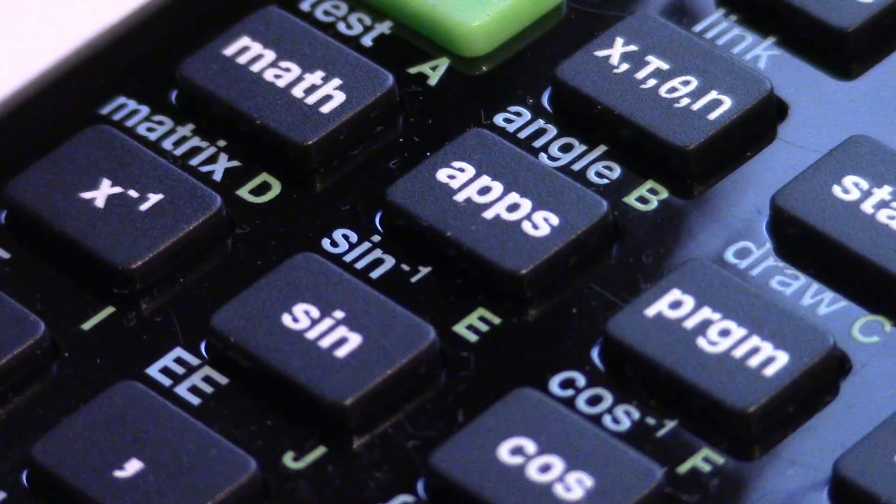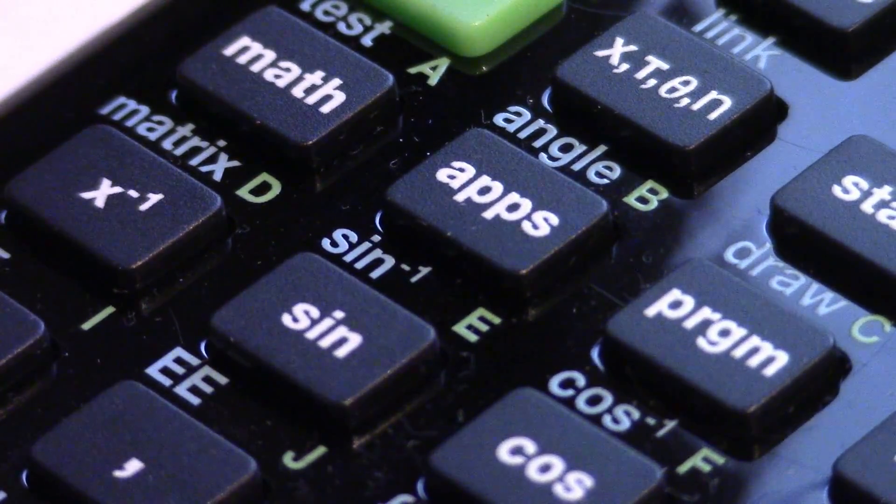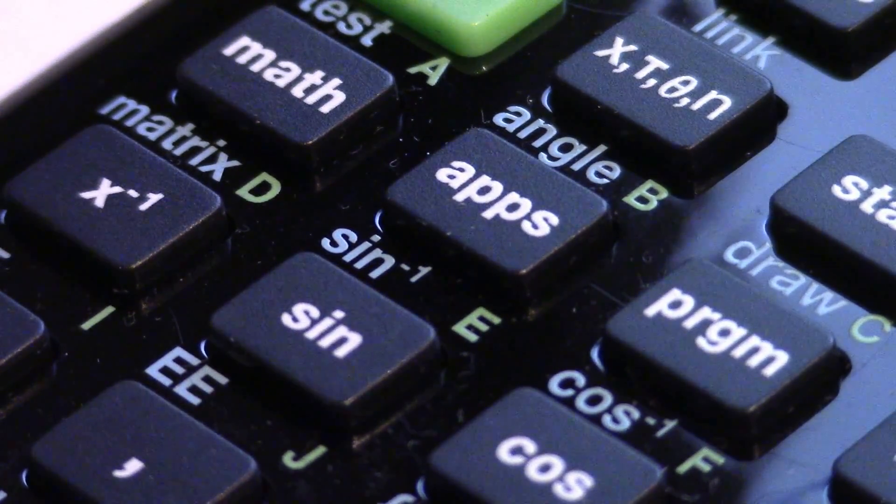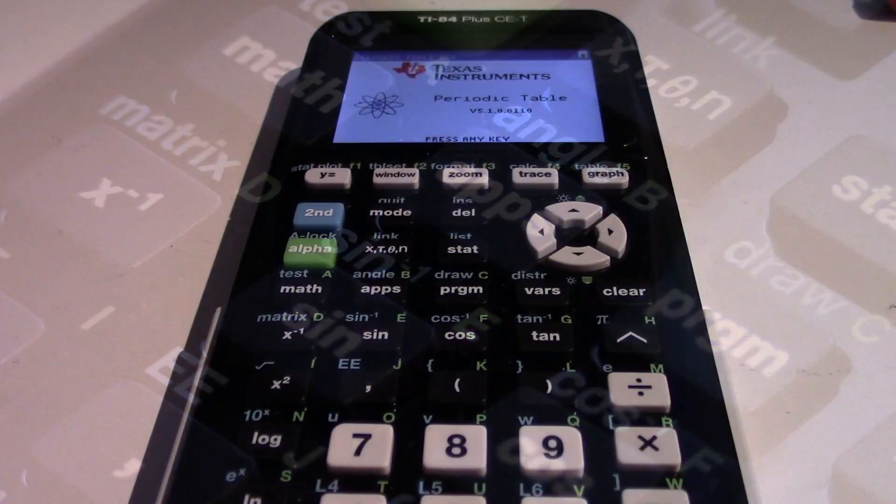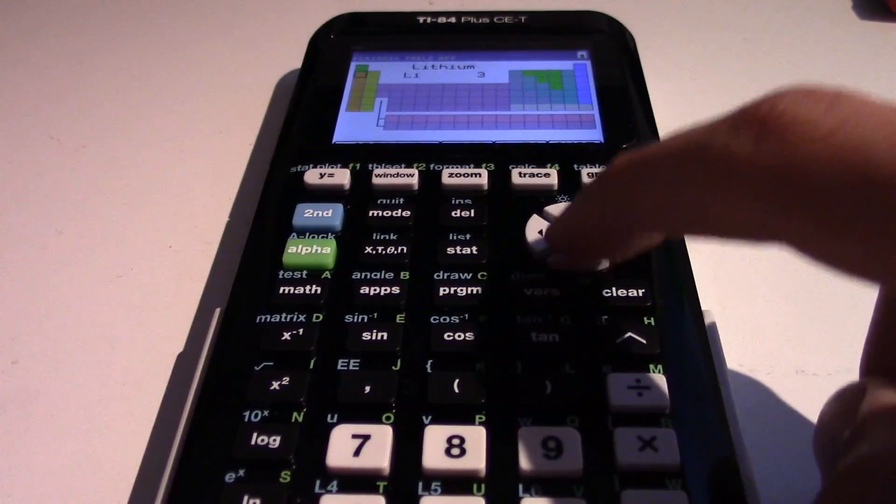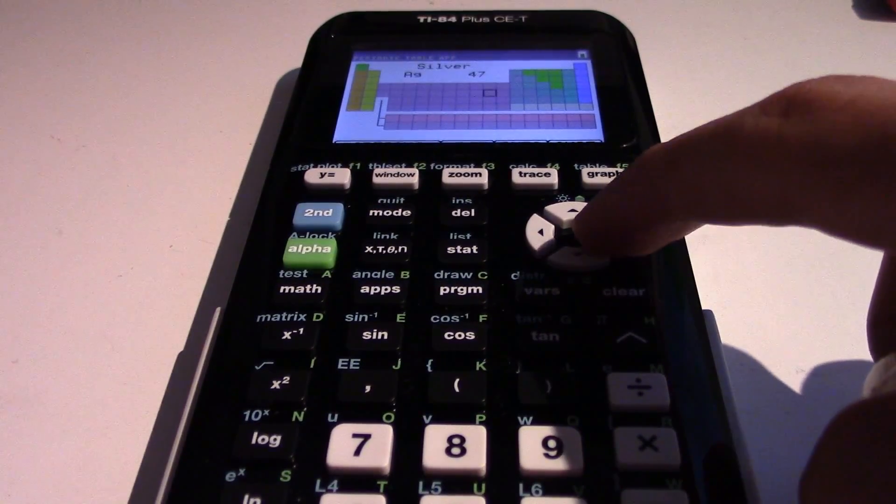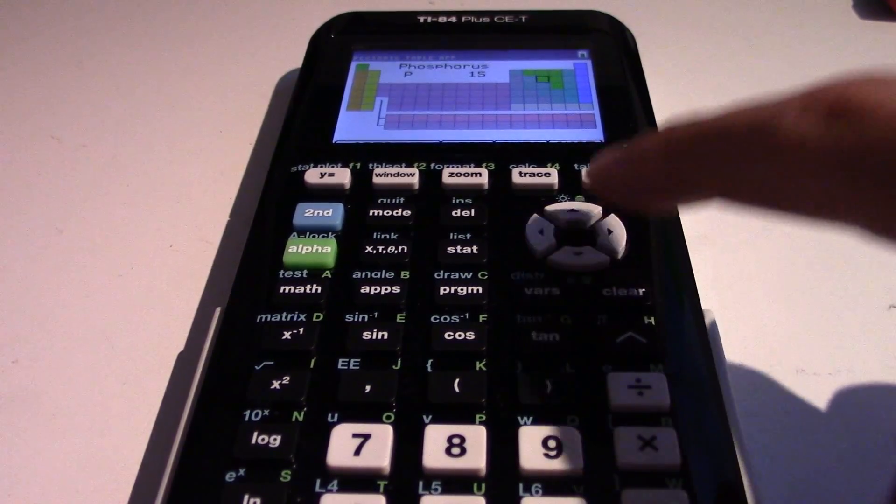As I mentioned before, you can use a computer to install apps onto the calculator. But there is also a bunch of apps that is already pre-installed, like the Periodic Table app. This allows you to view the periodic table of the elements, and view information about all kinds of atoms.